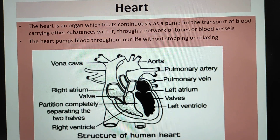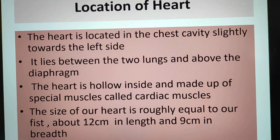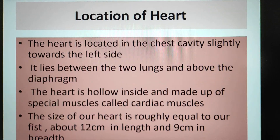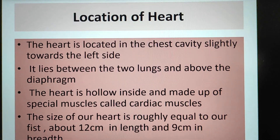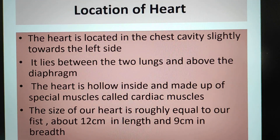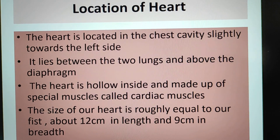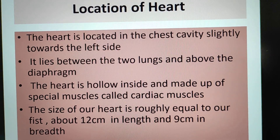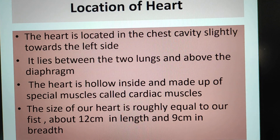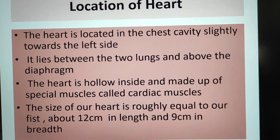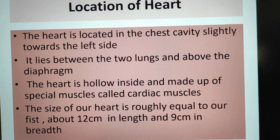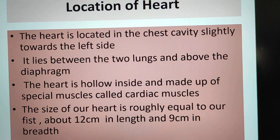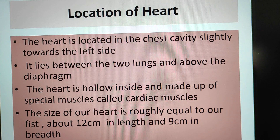Let us now see the location of the heart. Where is the heart located in our body? The heart is located in the chest cavity, slightly towards the left side. It lies between the two lungs and above the diaphragm. The heart is hollow inside and made up of special muscles called cardiac muscles. The size of a heart is roughly equal to a fist, about 12 cm in length and 9 cm in breadth.